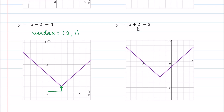Same way, for y equals Mod of (x plus 2) minus 3: x plus 2 equals 0 gives x equals minus 2. So the vertex is at x equals minus 2 and y equals minus 3. That means we go 2 units to the left and 3 units downwards. We reach the new vertex at (minus 2, minus 3) and then draw the V-shaped graph.